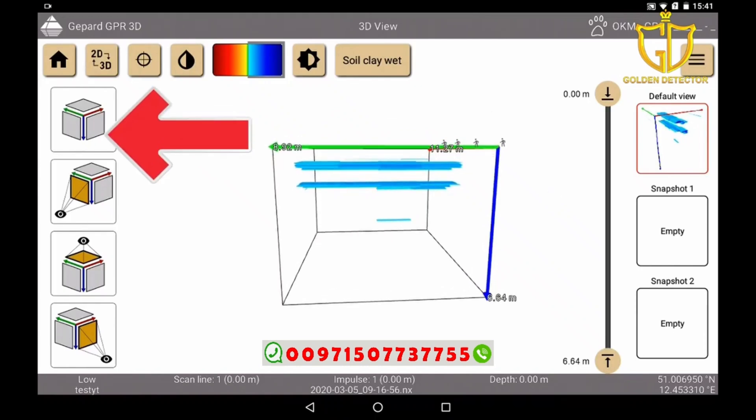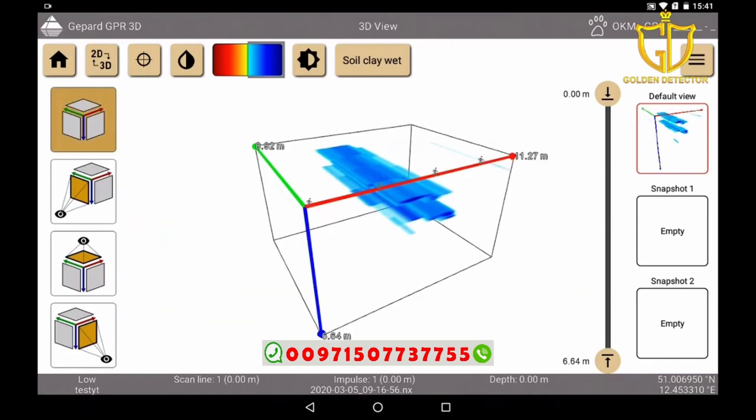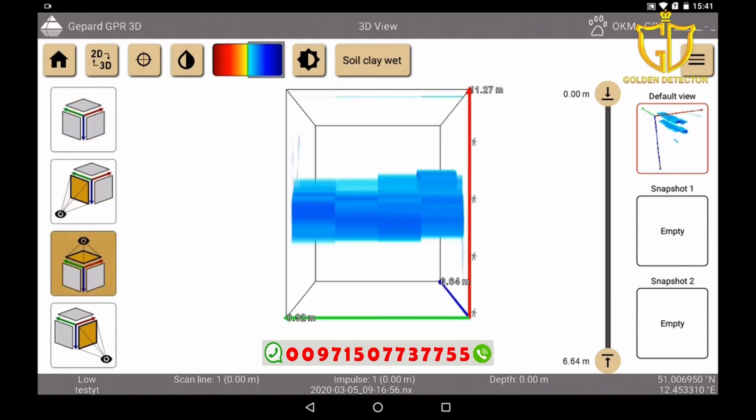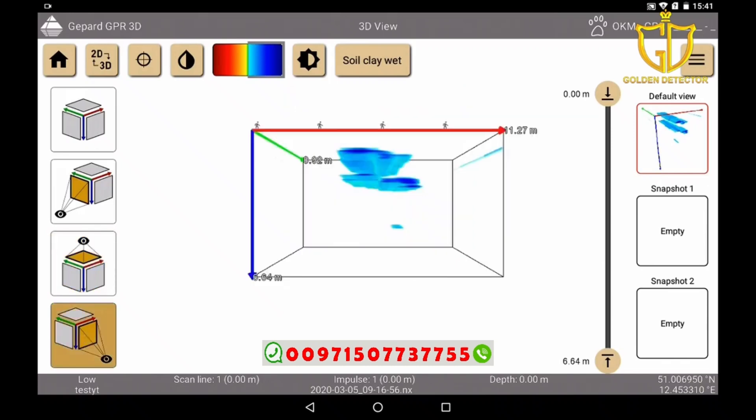These four quick views allow us to view our image particularly fast in different perspectives. Side view, scan direction in the ground, from above in scan direction, and side view parallel to the scan direction.